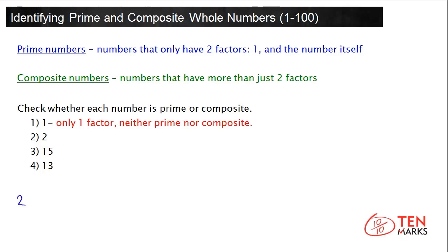Let's look at the number 2. The number 2 only has two factors: 1 and the number itself, 2, so it is a prime number. Remember, 2 is the only prime even number. All other even numbers are composite, because they will have 2 as a factor, meaning you can always divide even numbers by 2, along with 1 and the numbers themselves.